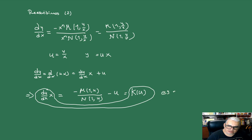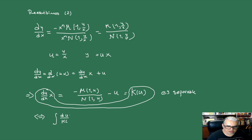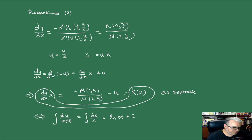Esta ecuación es separable. Separando, obtenemos la ecuación integral equivalente: la integral de 1 sobre K(u) du, es igual a la integral de 1 sobre x dx, que ya sabemos que es el logaritmo de x más alguna constante de integración. Veamos un par de ejemplos y luego hacemos otra cosa.